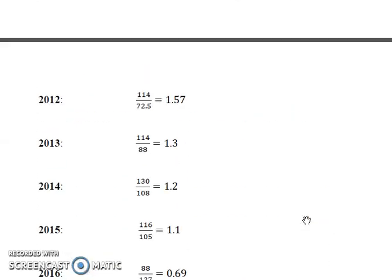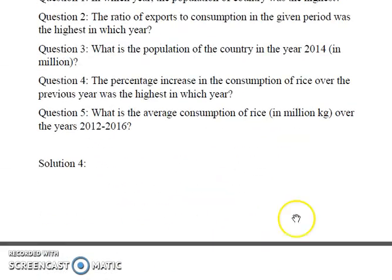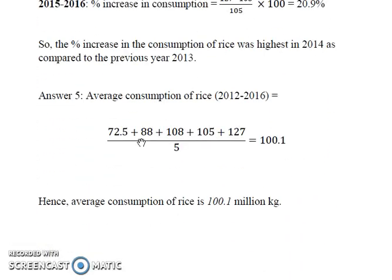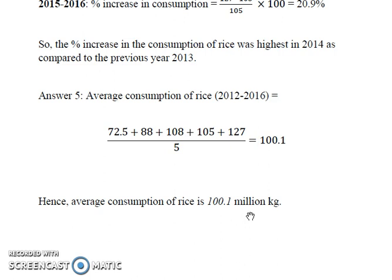In the last question we are asked to compute the average consumption of rice over these years. We already found the consumption values for each year in question 1, so we just need to calculate the average, which gives us 100.1 million kg. With this we conclude the data analysis and interpretation part. If you are facing any problem understanding any part, please let me know in the comment section. Thank you.